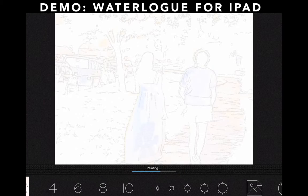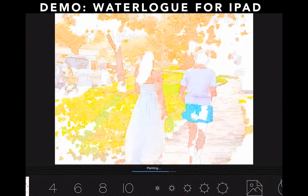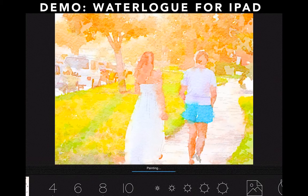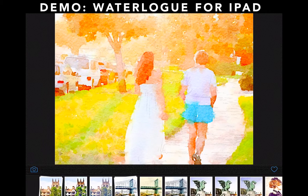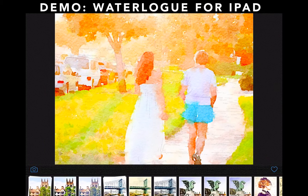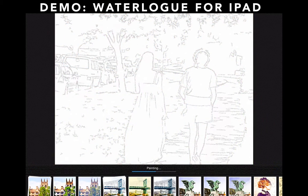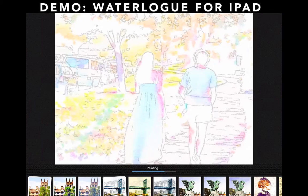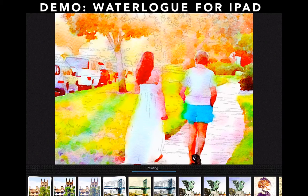I find it kind of mesmerizing to watch. After this is done painting, we'll pick a different style called Color Bloom and see how that affects it. As it's painting, you can see the paint looks much more vivid and wet, so it seeps past the borders a bit more.